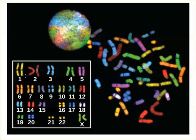Looking at the human karyotype, the first 22 pairs of chromosomes are said to be autosomes or non-sex chromosomes. The last pair of chromosomes are the sex chromosomes. If the individual has two X chromosomes, then the individual is phenotypically female. If there's an X and a Y chromosome present, then the individual would be predicted to be male.